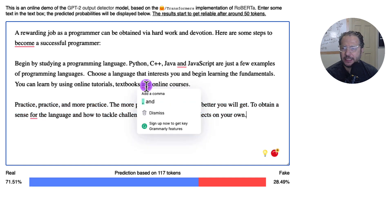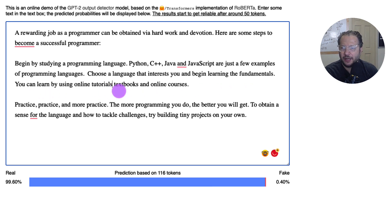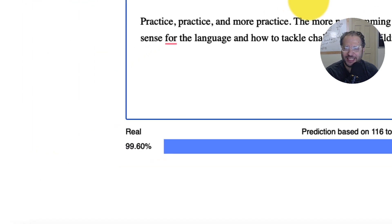Let's see what else we can do. That comma made it jump all the way up to 99.6%.